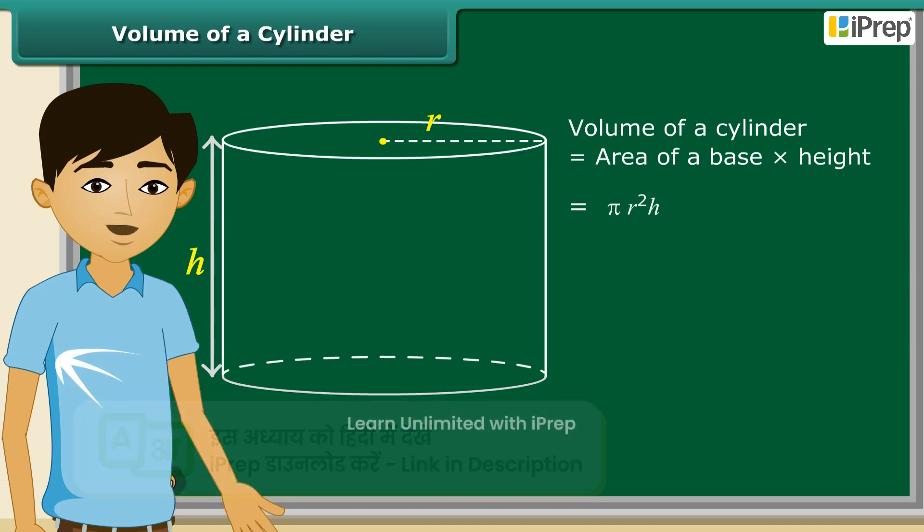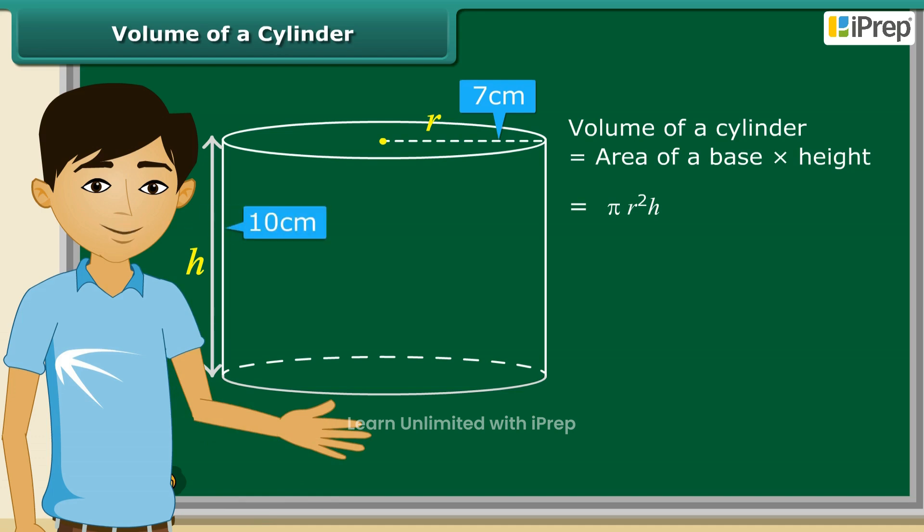Well, let us try an example. We have a closed right circular cylinder of radius 7 cm and height 10 cm. Let us find its volume.